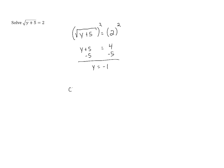So checking this gives us, on the left, the square root of y plus 5 will be negative 1 plus 5, and we want that to equal 2. Now, negative 1 plus 5 is 4, so we've got the square root of 4 equals 2.